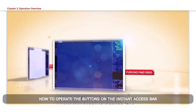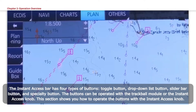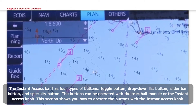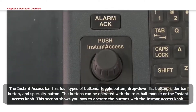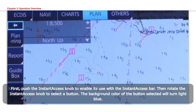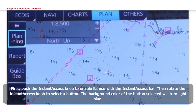How to Operate the Buttons on Instant Access Bar. The Instant Access Bar has four types of buttons: toggle button, drop-down list button, slider bar button, and specialty button. The buttons can be operated with the Trackball module or the Instant Access knob. Push the Instant Access knob to enable its use with the Instant Access bar. Then rotate the Instant Access knob to select a button. The background color of the button selected will turn light blue.